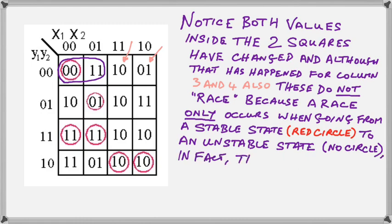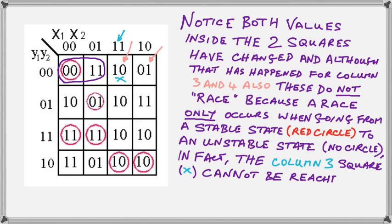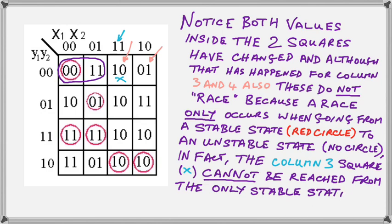In fact, the column 3 square in row 1 will not be accessed at all in the normal operation of the device, since row 1 only contains one stable state. So we have successfully found race 1.